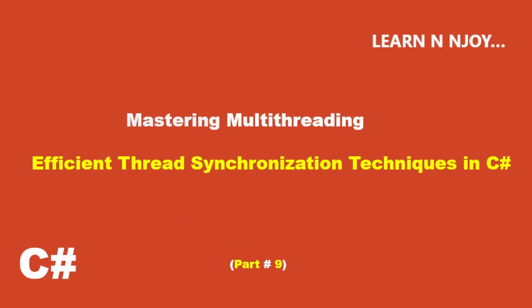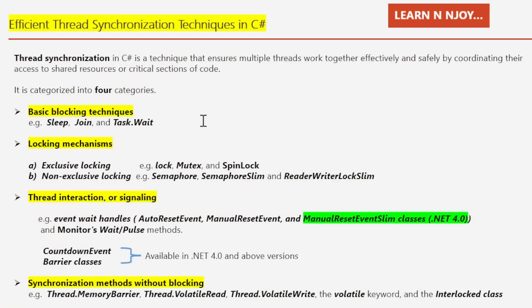Let's get started with efficient thread synchronization techniques. Whenever two or more threads tend to access a shared resource at the same time, the system needs a synchronization mechanism to ensure that only one thread has exclusive access. Synchronizing access to data is a safe way to prevent race conditions. Thread synchronization in C# is a technique that ensures multiple threads work together effectively and safely by coordinating their access to shared resources or critical sections of code. Thread synchronization can be categorized into four main categories.